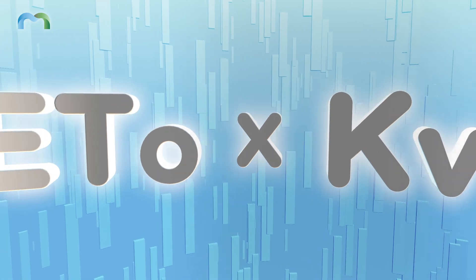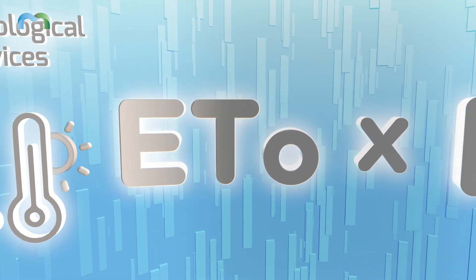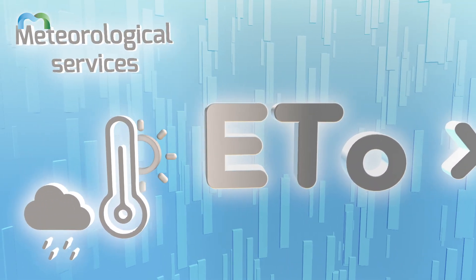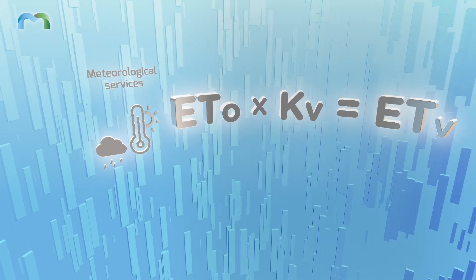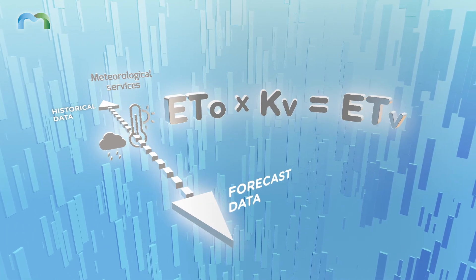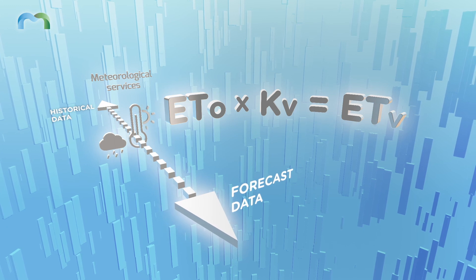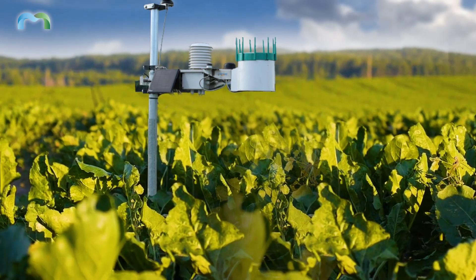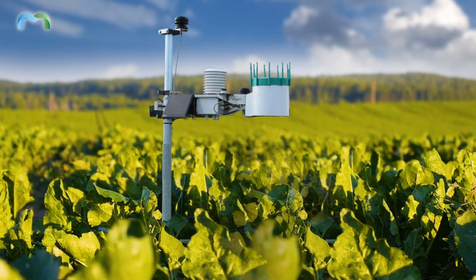The other part of the equation is ETO. MANA's Hyperlocal Weather Service provides the current ETO in the specific location of the field. It also provides historical and 14-day forecast data. In addition, users can connect their own weather equipment if available.